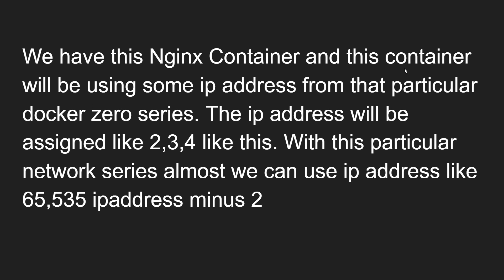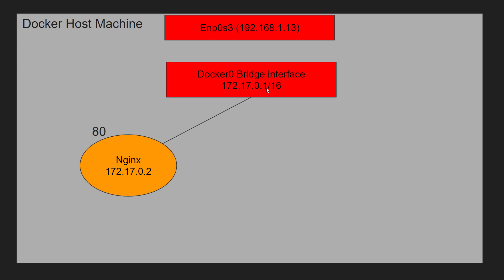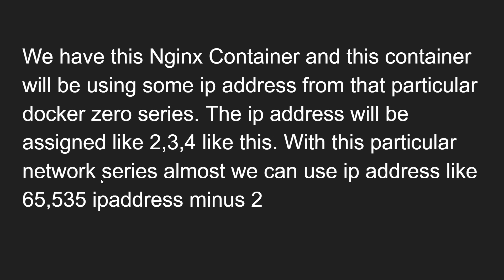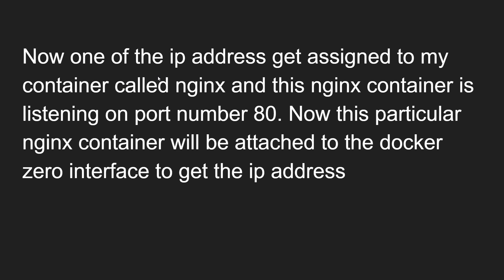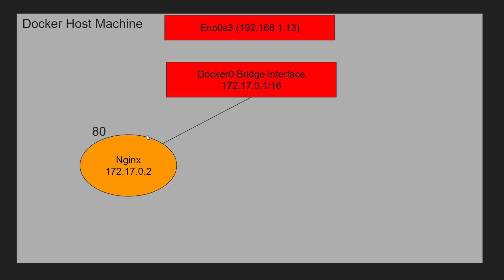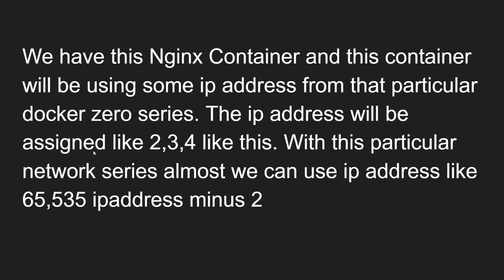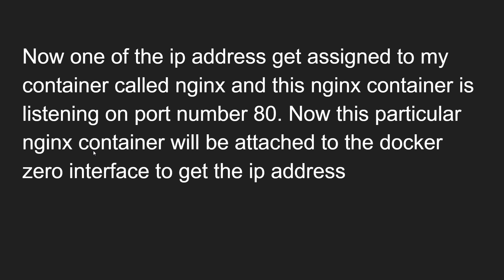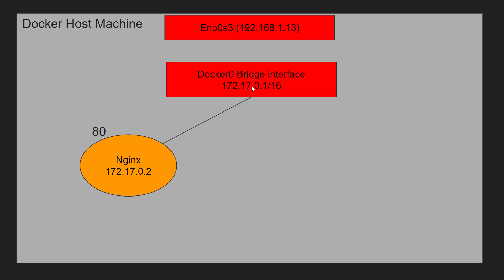Whenever you create containers, each container gets an IP address from the docker0 series — like 172.17.0.2, 172.17.0.3, 172.17.0.4, and so on. We can use up to 65535 minus 2 IP addresses in this network. One IP address gets assigned to my nginx container, and this nginx container is listening on port 80. The container attaches to the docker0 bridge interface to get its IP address.